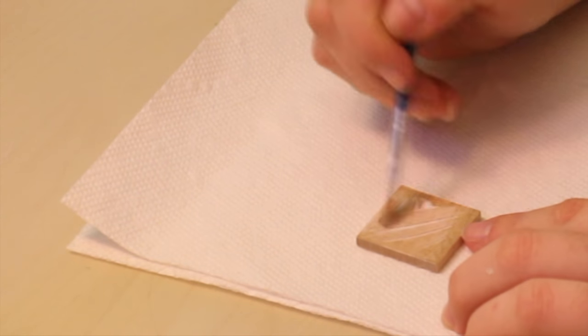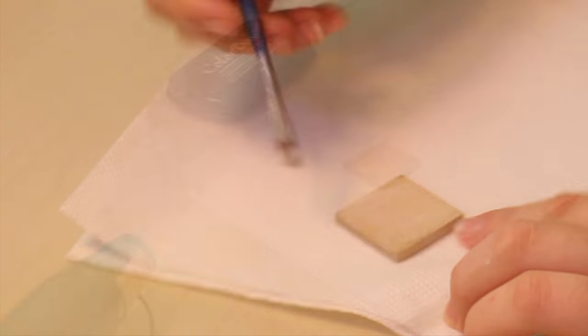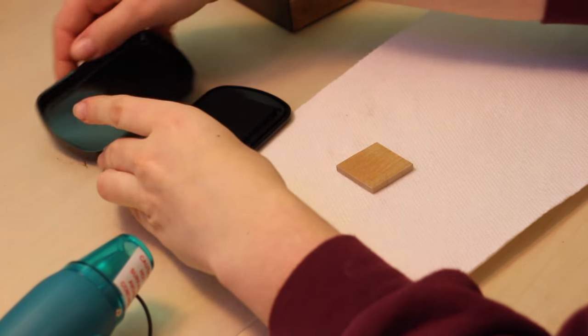First, cover the block with Mod Podge. This layer is necessary because normal pens or decorations will seep through into the wood and you don't want that to happen.